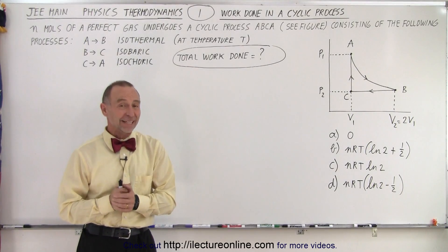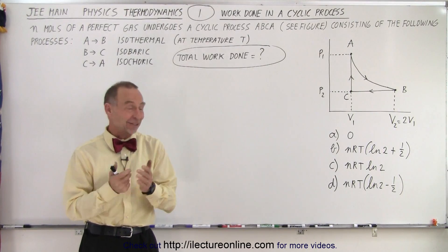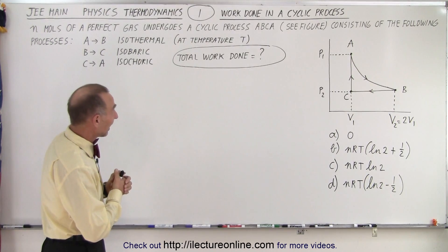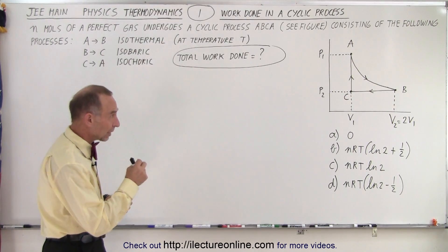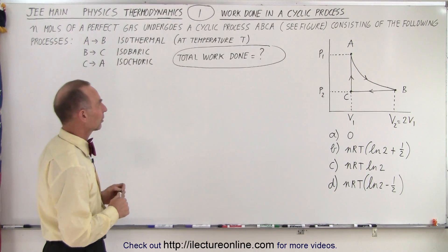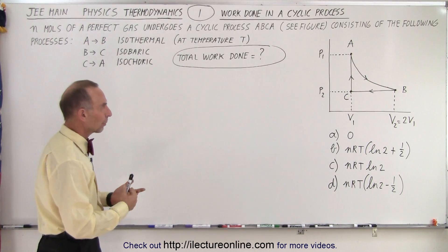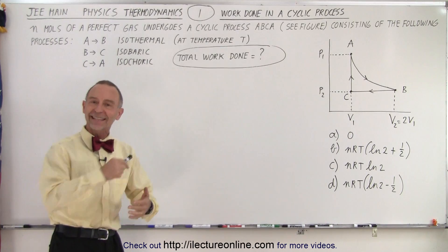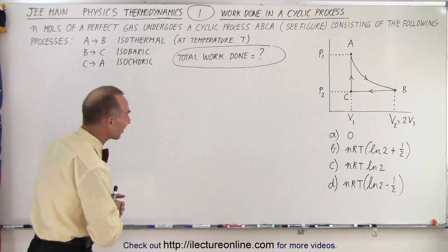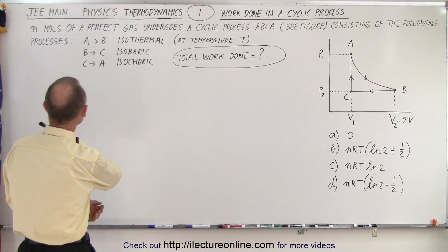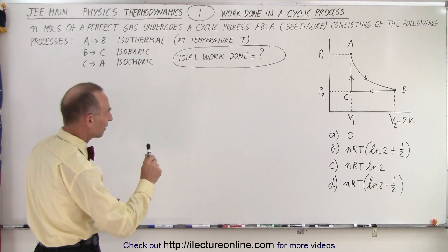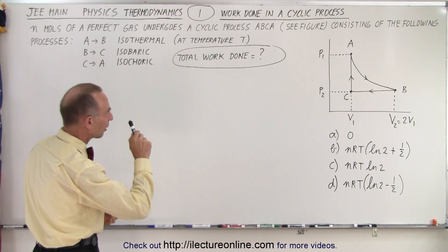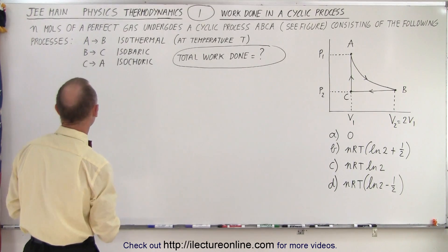Welcome to our lecture online. Here's a really interesting problem. I actually like a problem like this, and it deals with a cyclic process, and they're asking us to calculate the work done in a particular cyclic process. So let's read the problem. Cyclic process. N moles of a perfect gas undergoes a cyclic process from A to B to C and back to A, see figure, consisting of the following processes.